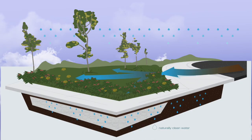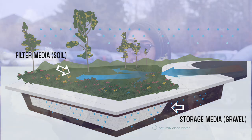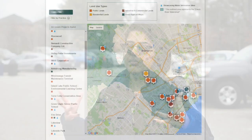Low-impact development facilities are all engineered features and they're designed in a way where you have a filter media and a storage media. The filter media is essentially soils, and the storage media consists of gravel and stones.